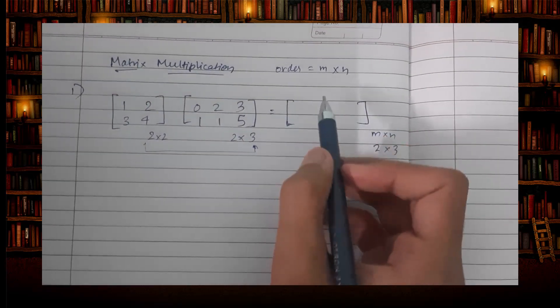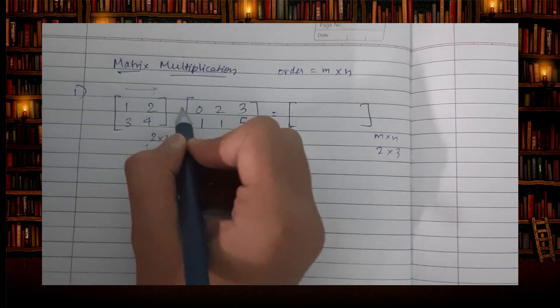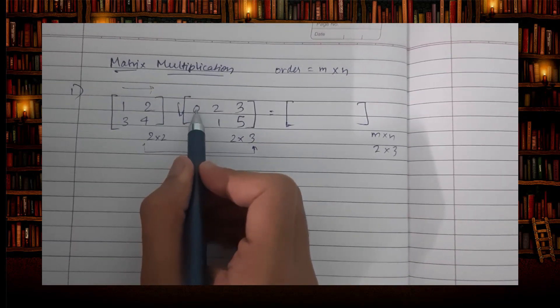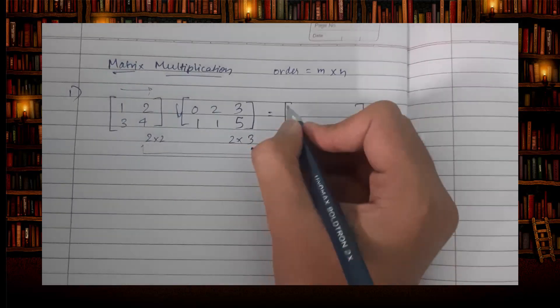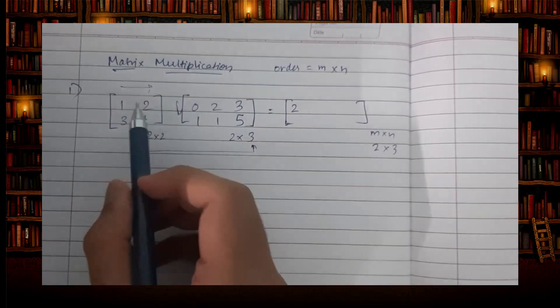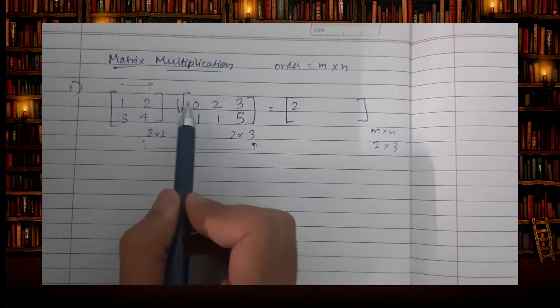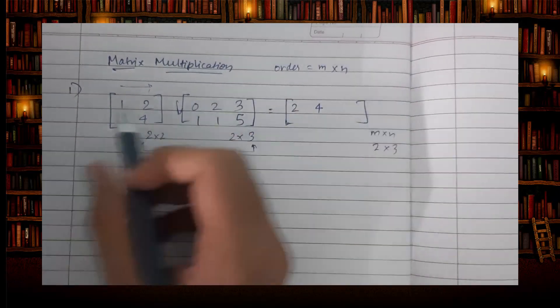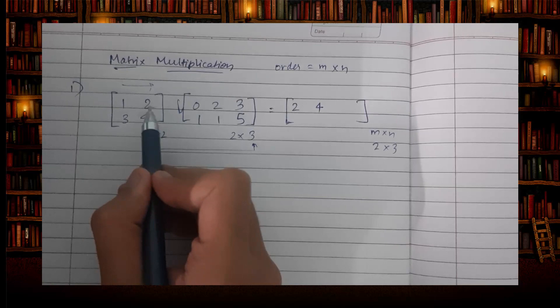First, rows into columns. So 1 into 0 is 0, plus 2 into 1 is 2. Same way again, 1 into 2 is 2, plus 2 into 1 is 4. Then 1 into 3 is 3, plus 2 into 5 is 10, so 13.